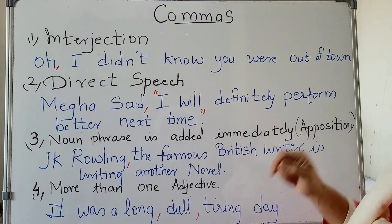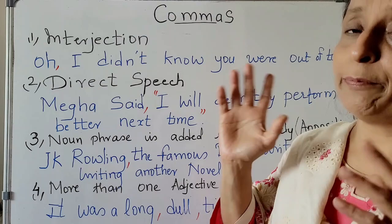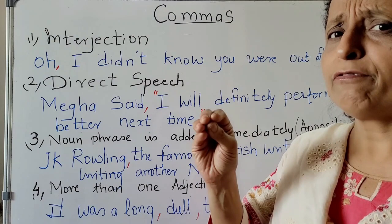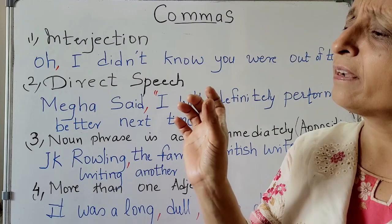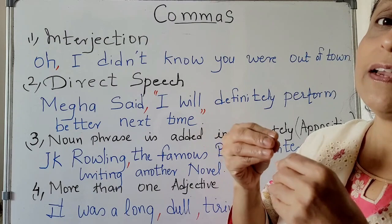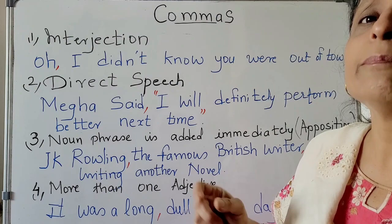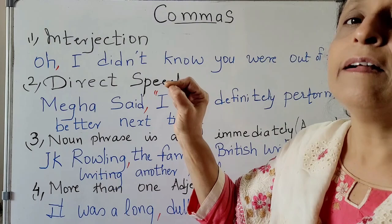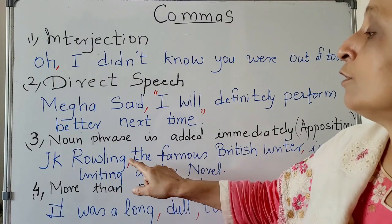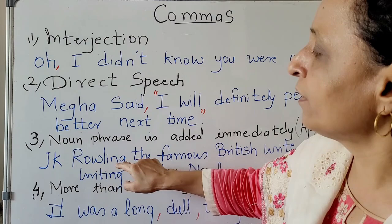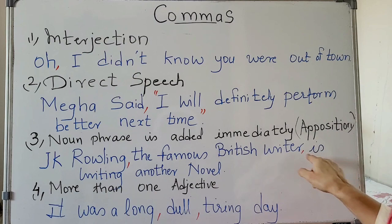Now a noun phrase added immediately — you should know what apposition is. In apposition, Virat Kohli, the great cricketer — both nouns are in apposition; they complete each other. Whenever it is a noun in apposition, you write: Virat Kohli, the great cricketer, then whatever you want to tell about Virat Kohli. The example in your book is JK Rowling — after the name you put a comma: JK Rowling, the famous British writer, is writing another novel.